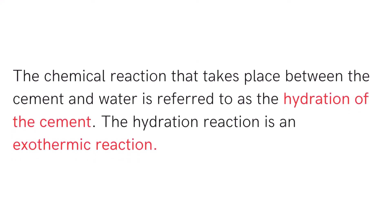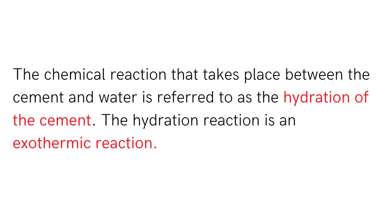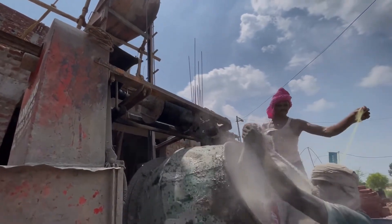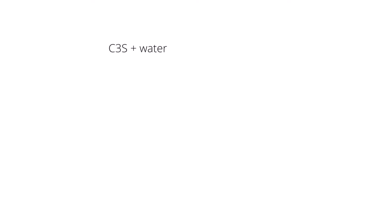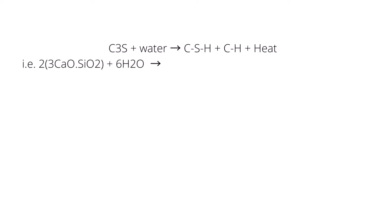Bogue compounds undergo a chemical reaction when reacted with water. The chemical reaction that takes place between cement and water is referred to as hydration of cement. The hydration of cement is an exothermic reaction. It is important to keep in mind that all the Bogue compounds do not undergo reaction with water all at once — there is a particular order in which each compound reacts to form a particular hydration product.